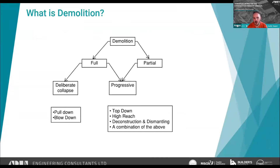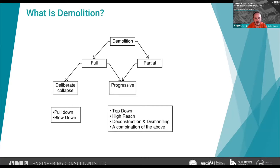For full demolition you can use deliberate collapse mechanisms — pull downs and blow downs. Pull downs use normally an excavator or bulldozer to pull a structure over after pre-weakening it. Blow downs use explosives: cutting charges to cut steel and concrete, and kicking charges to kick them over. You can use a combination of all three for a deliberate collapse mechanism.